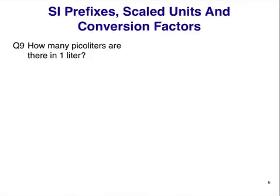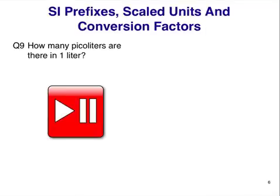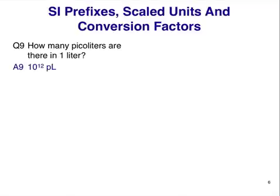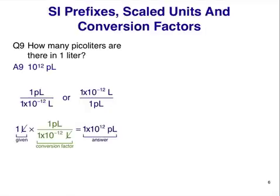How many picoliters are there in one liter? Pause here and try the answer. The answer is 10 to the 12 picoliters. Ready? First, we'll write down two conversion factors in the form of ratios, pico meaning times 10 to the minus 12. And then we'll set up the calculation. First, write down the given. In this case, we are given one liter. We are asked to find the number of picoliters, so the answer must be in picoliters. We'll choose the appropriate conversion factor. Multiplying the terms and make sure that the units cancel appropriately.